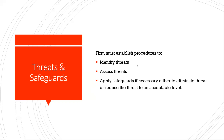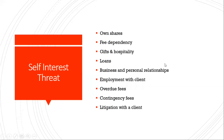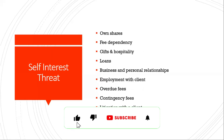The firm must assess the severity or significance of those threats — how much the threat is compromising the opinion or compromising the independence of an auditor. After identifying and assessing severity, apply safeguards if necessary, either to eliminate the threat or reduce it to an acceptable level. The most common threats we will discuss are: self-interest threat, self-review threat, familiarity, intimidation, and advocacy.